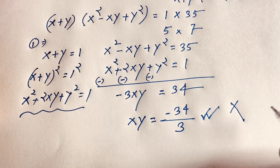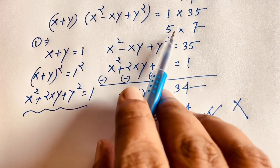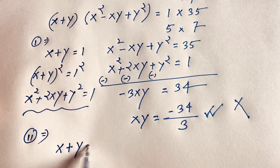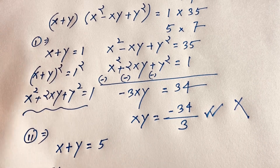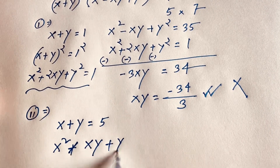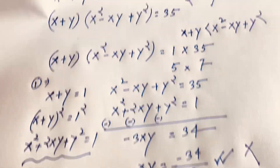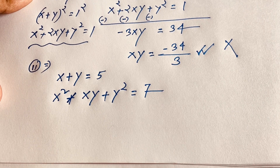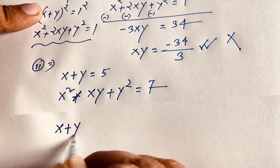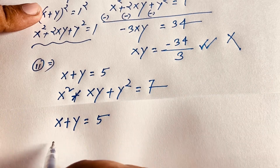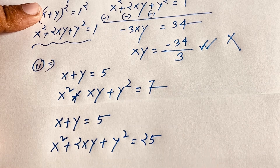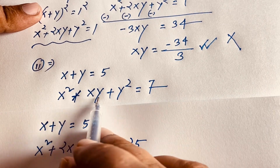Moving to Case 2: x + y = 5 and x² − xy + y² = 7. Squaring both sides of x + y = 5 gives x² + 2xy + y² = 25.